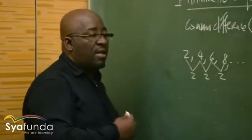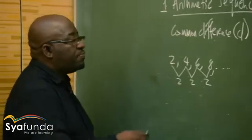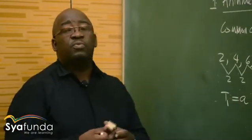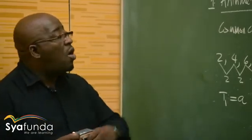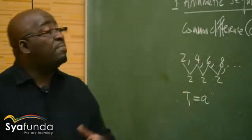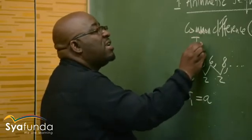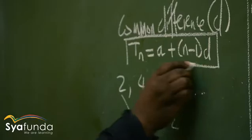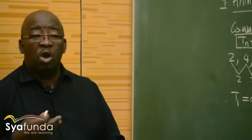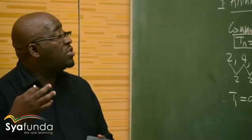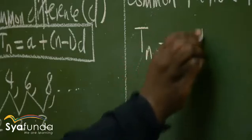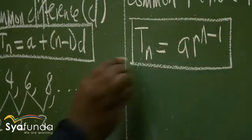Generally, the first term is referred to as A — the first letter of the alphabet. Now, all these sequences have a general term. The general term for the arithmetic sequence is: TN equals A plus into N minus 1, D. The general term for the geometric sequence is: TN equals AR to the power N minus 1.